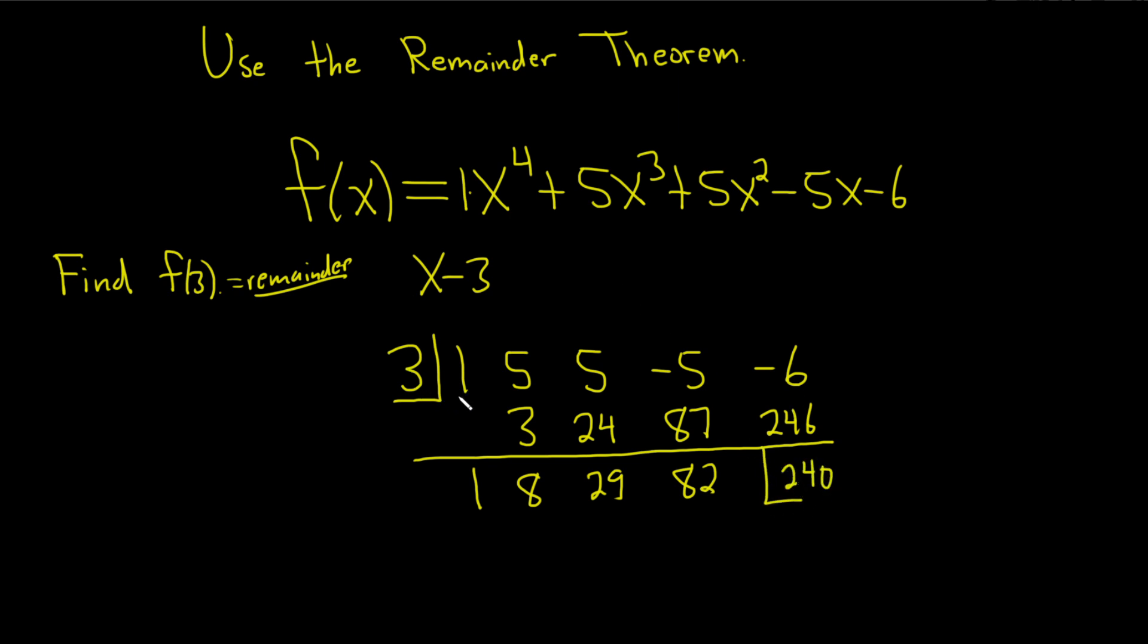And you add that and you get 240. Let's just double check that. Bring down the 1. 1 times 3 is 3. You add, you get 8. 8 times 3 is 24. You add, you get 29. 29 times 3 is 87. You add, you get 82. 82 times 3 is 246. You add, you get 240. This is the remainder.